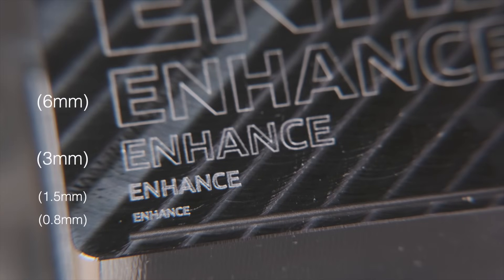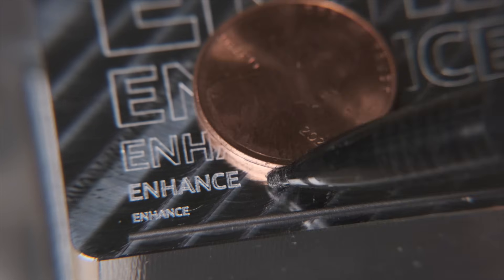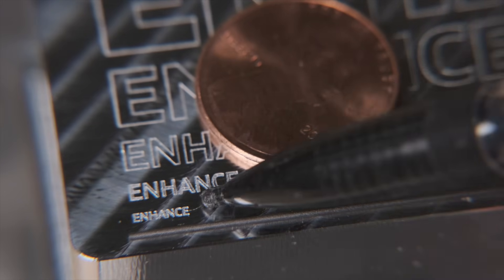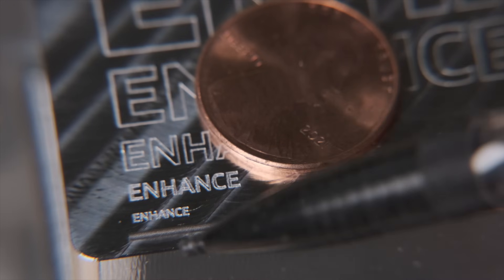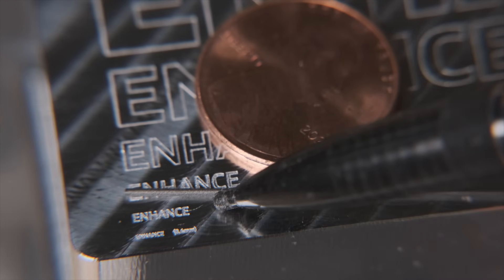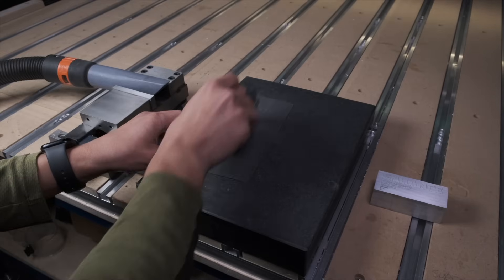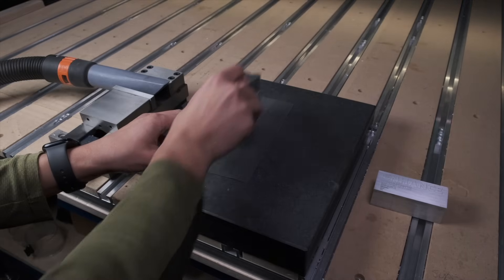You can see the details on even the 0.8 millimeter tall engravings are quite legible. Here's a penny for scale, since I couldn't fit a banana in frame. And here's the attempted 0.4 millimeter engraving hiding under a mechanical pencil lead. You can't really see much, so let me lap the surface on some thousand grit sandpaper and get this under the microscope.